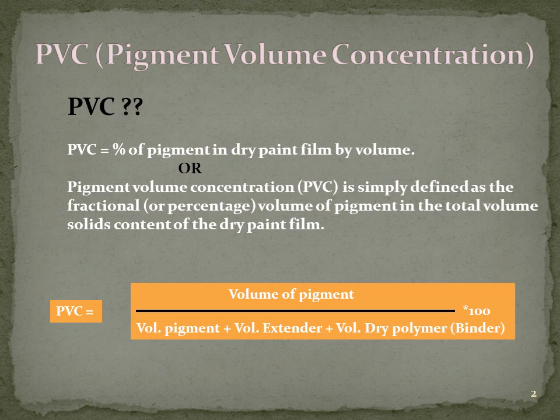PVC is the pigment volume concentration. We can define it as the pigment volume percentage after drying the paint film — meaning how much pigment is available in the dry film by volume. Another way to define PVC: it is the volume of pigment divided by the total volume of solids in the dry paint film. The formula is: PVC = Volume of Pigment / (Volume of Pigment + Volume of Extender + Volume of Dry Polymer Binder) × 100.